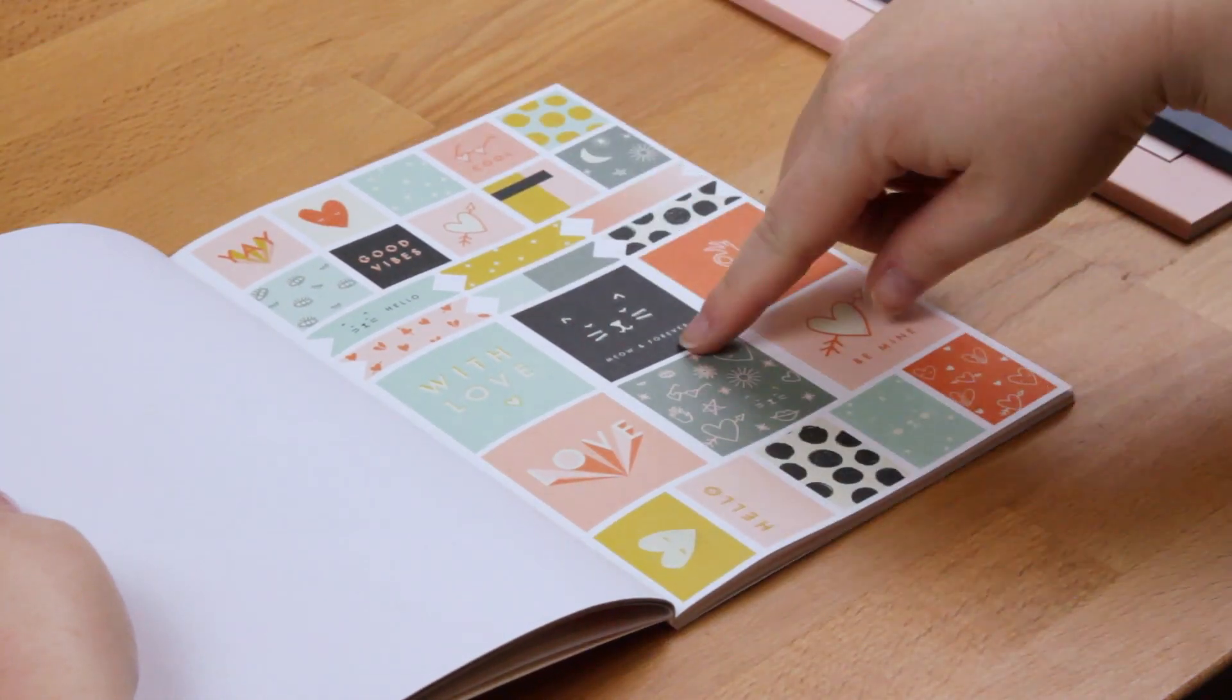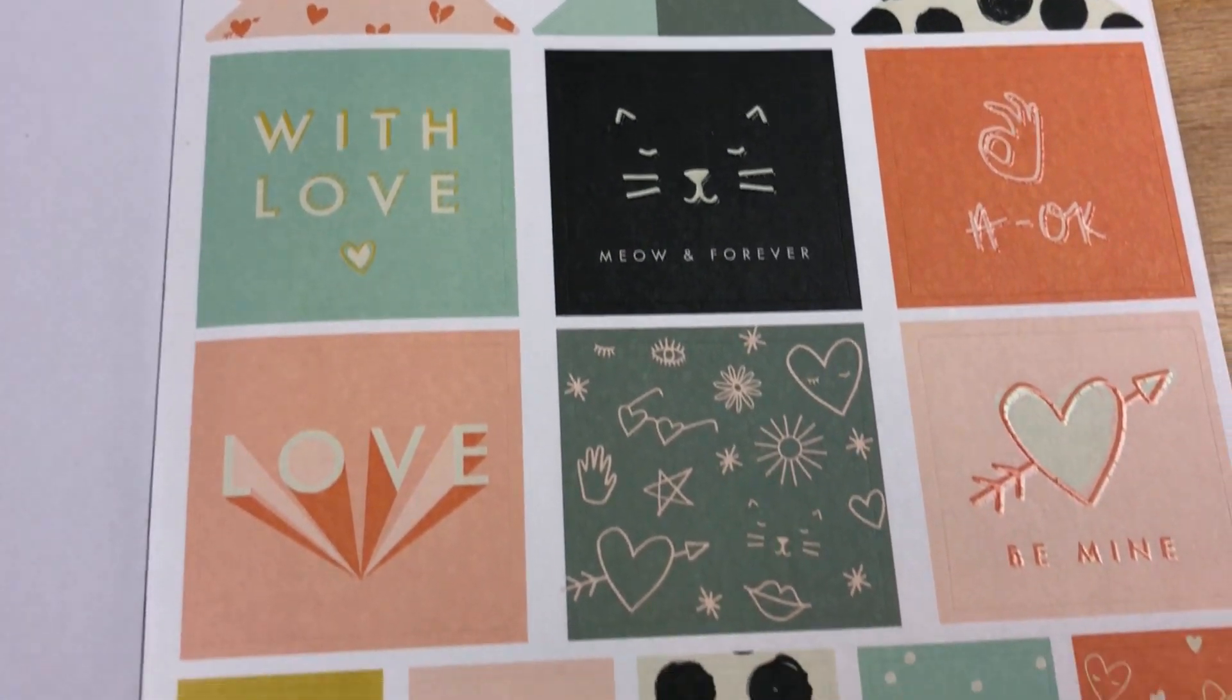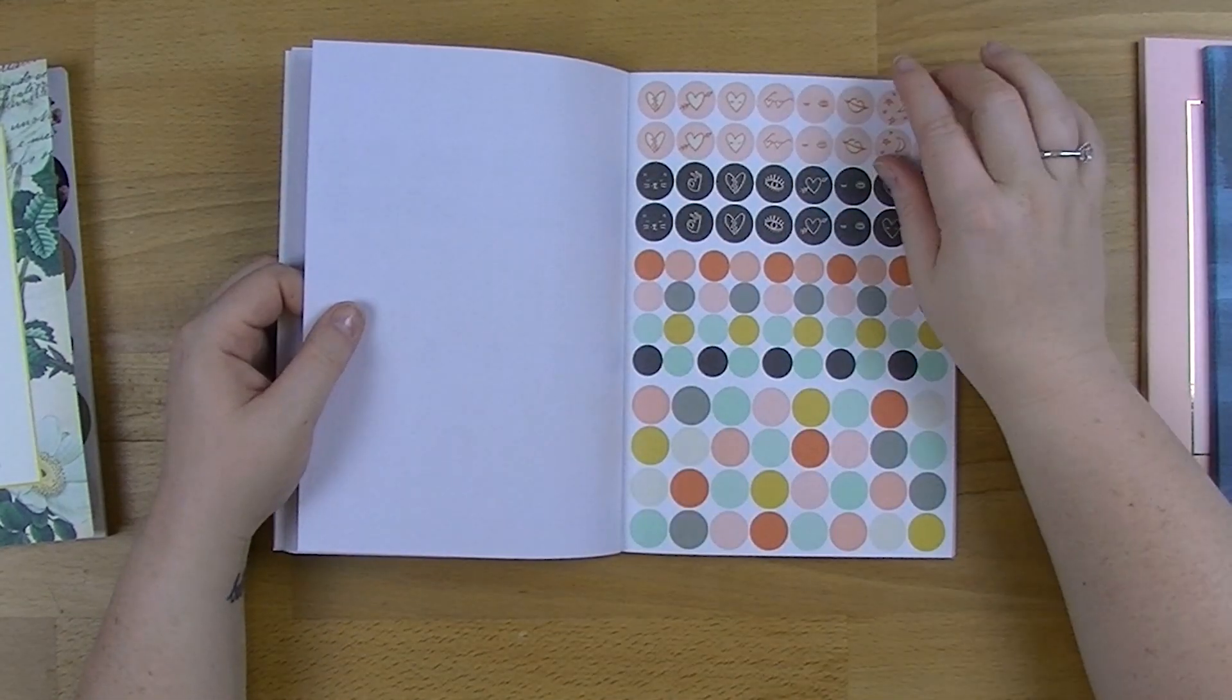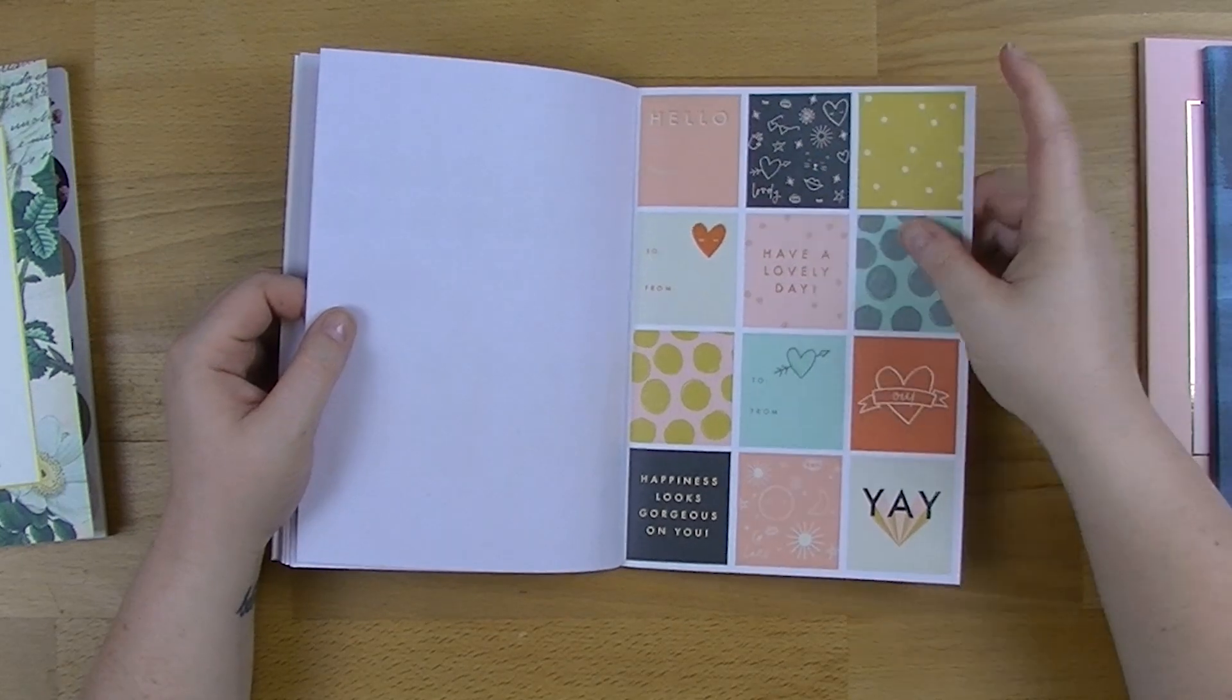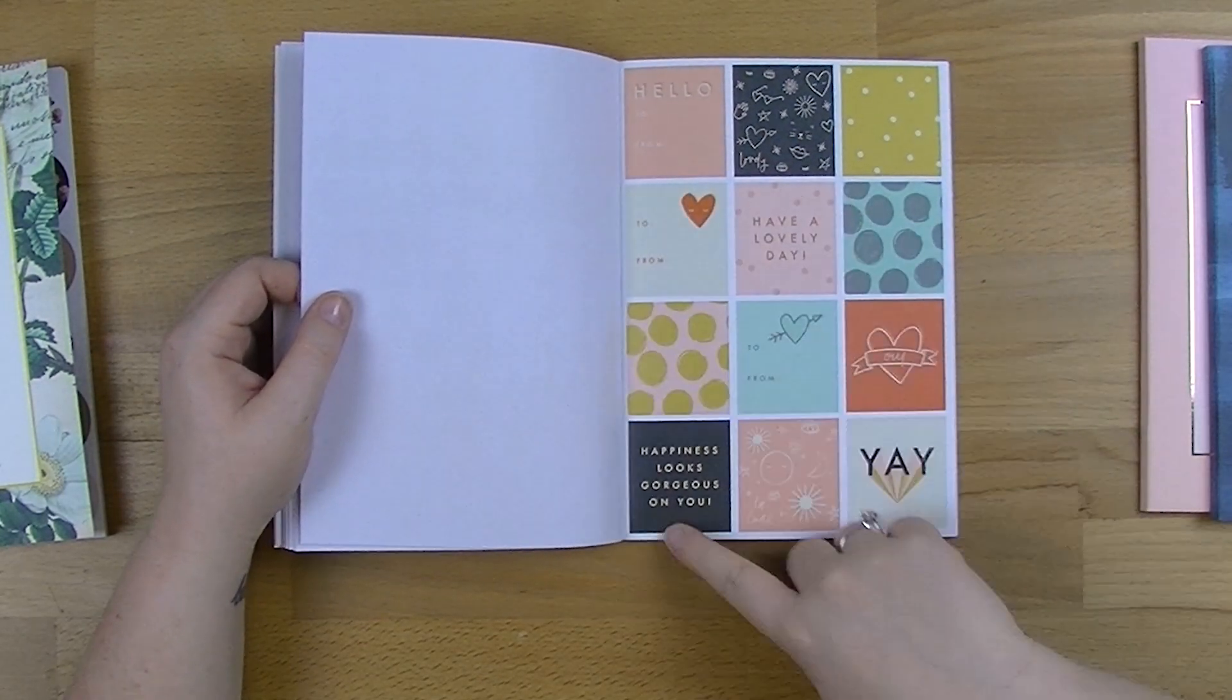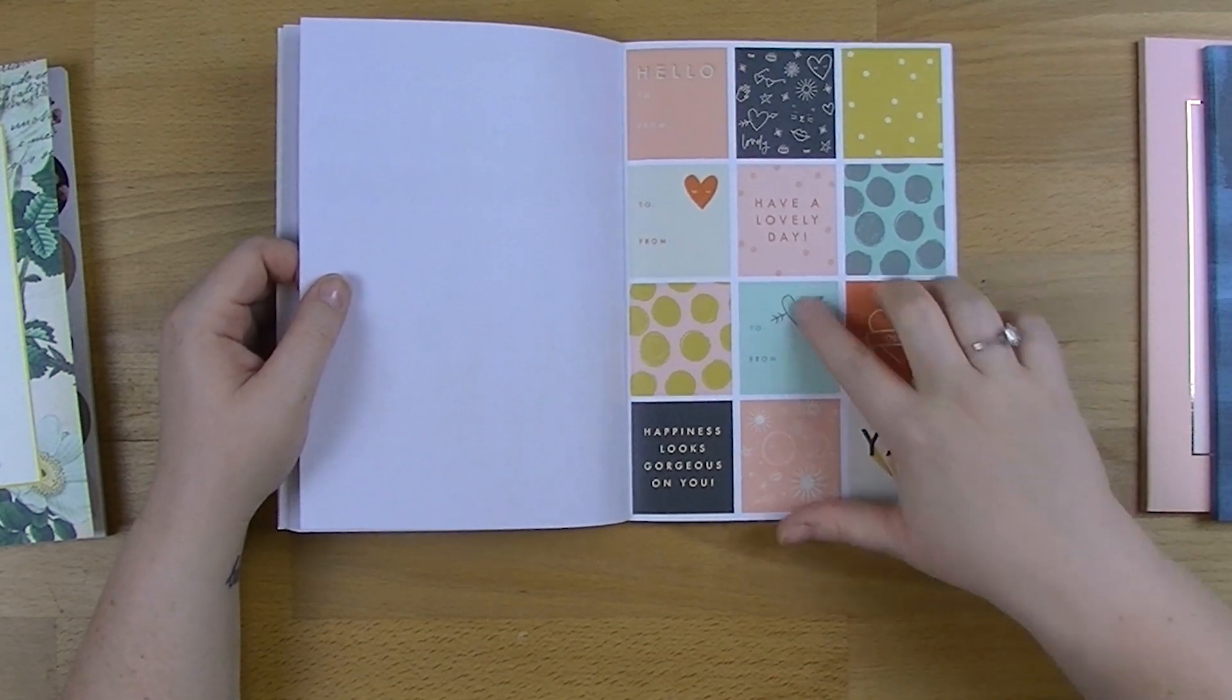We've got some squares, meow and forever. That's gorgeous. This actually, that meow and forever would be a really good thing to put on like on a Valentine's Day week. We've got a bunch of circles here with some symbols and then a bunch of plain ones as well. We've got some squares, we've got some tags here, but then some quotes and just some decorative ones. And some of those are embossed as well.